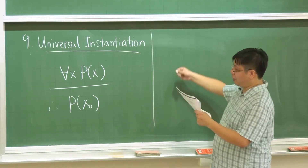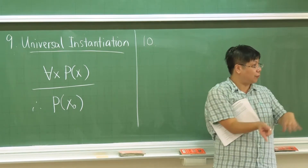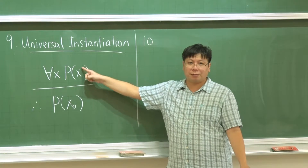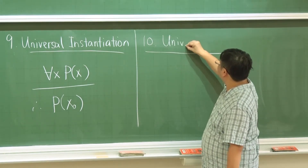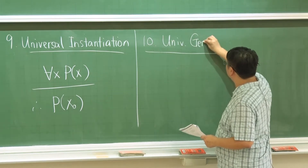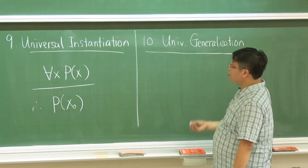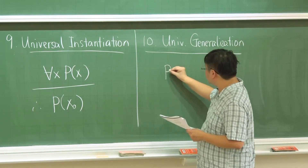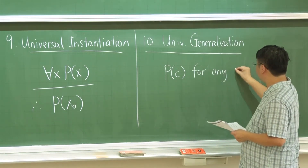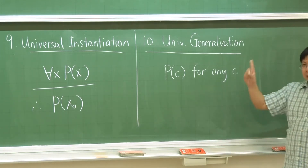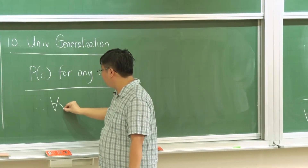The opposite is universal generalization — we try to generalize things. If P(c) is true for any possible c you can consider, then this has exactly the same meaning as writing 'for all x, P(x).' So we can generalize from any arbitrary instance to a universal statement.